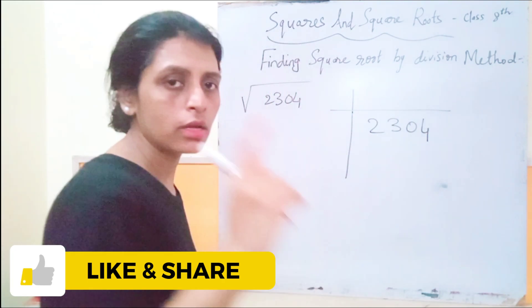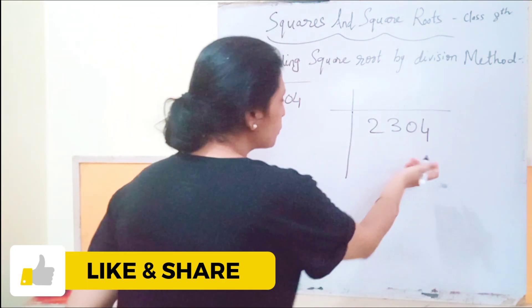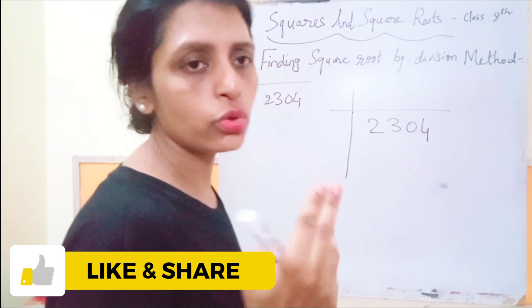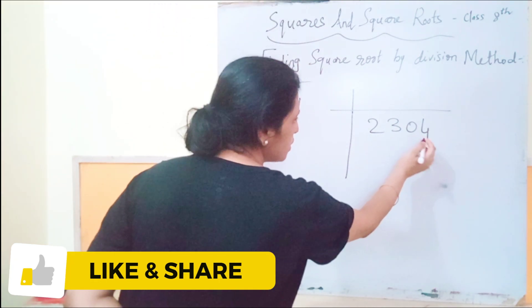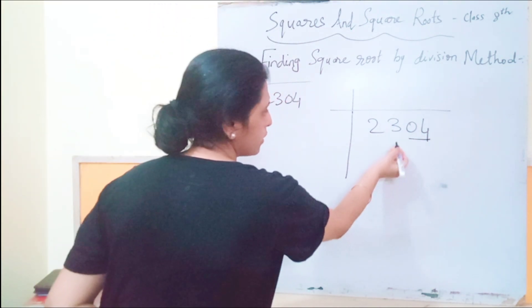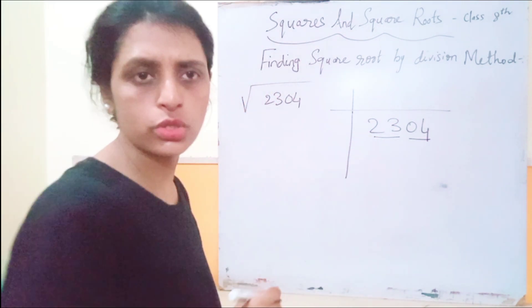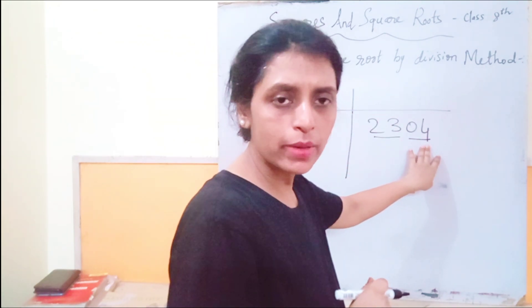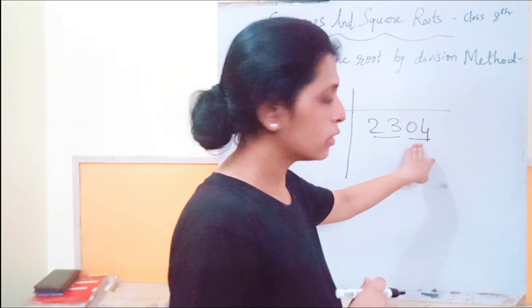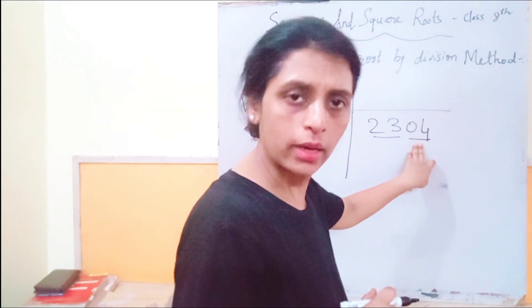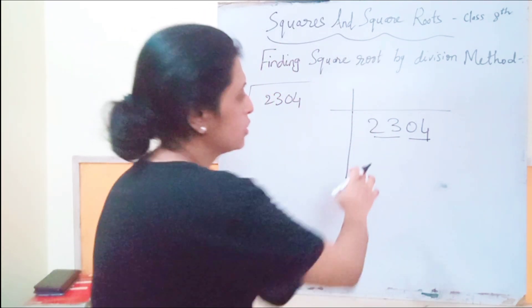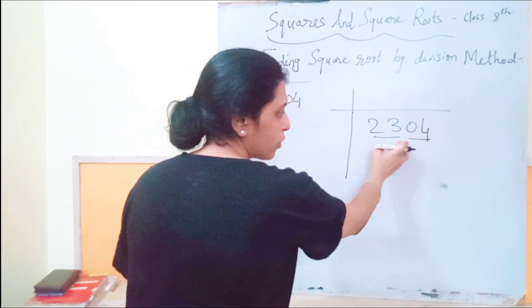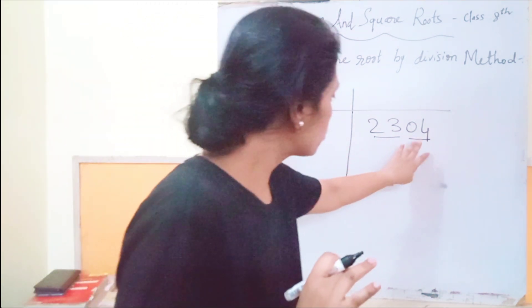The first step is: from the ones place, we pair up two-two digits. So we pair up from right to left. When we have the number 2304, we get two pairs — 23 and 04.